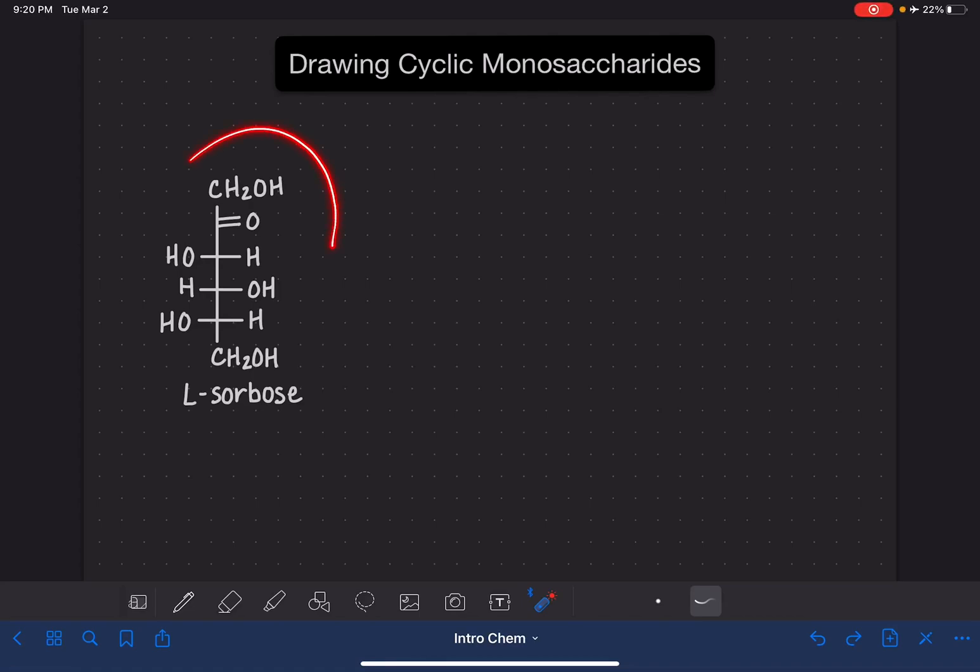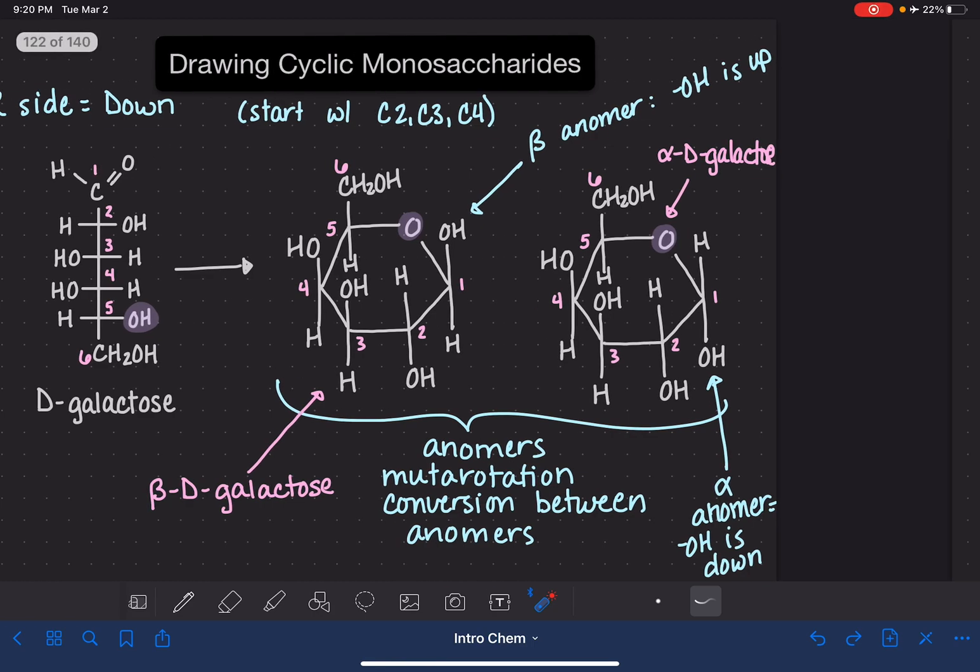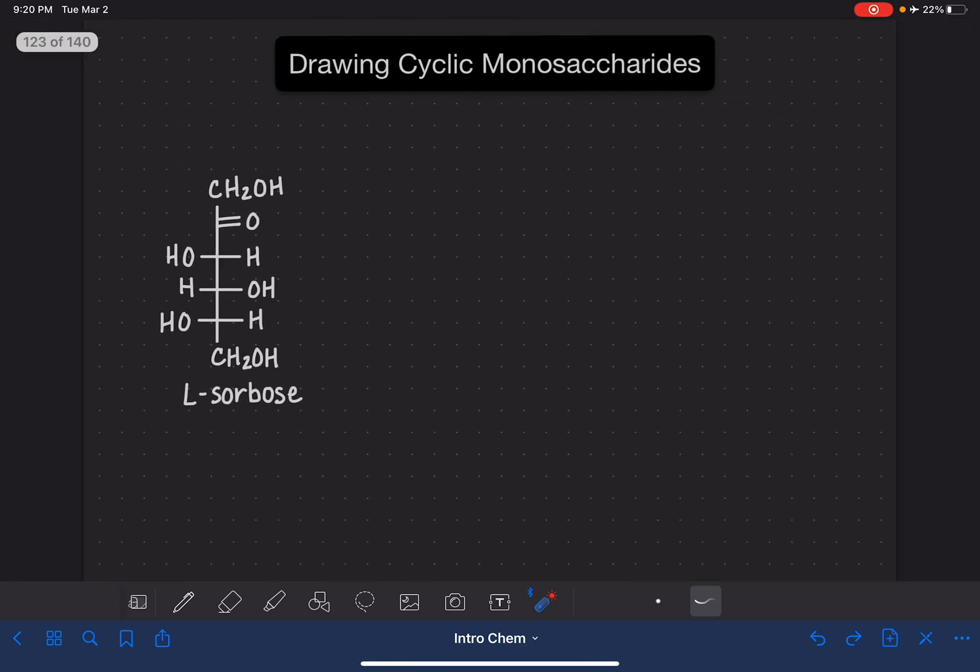In this video, I'm going to teach you how to convert a ketose into a cyclic structure. My assumption is that you watched my previous video and you already know how to convert an aldose molecule into a cyclic structure. If you don't know how to do that, or if you haven't watched this video yet, then what I'm about to do here might be a little bit confusing. If it is, I just encourage you to go back and watch the previous video.